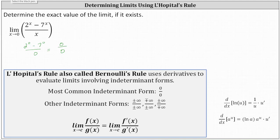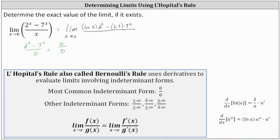Applying L'Hôpital's rule to the given limit, we have the limit as x approaches zero of the derivative of the numerator divided by the derivative of the denominator. To differentiate two to the power of x and seven to the power of x, we apply the derivative formula shown. The chain rule is included, but because u equals x, u prime equals one, so the chain rule is not required. The derivative of two to the x is natural log of two times two to the x, minus the derivative of seven to the x, which is natural log of seven times seven to the x, all divided by the derivative of the denominator, which is one.